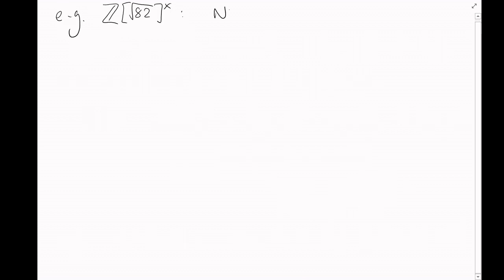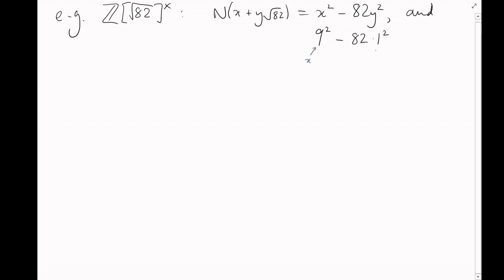For example, in ℤ[√82], the element x + y√82 has norm x² − 82y², and without too much difficulty you might spot that 9² − 82 × 1² equals −1, so x = 9, y = 1: 9 + √82 is a unit.